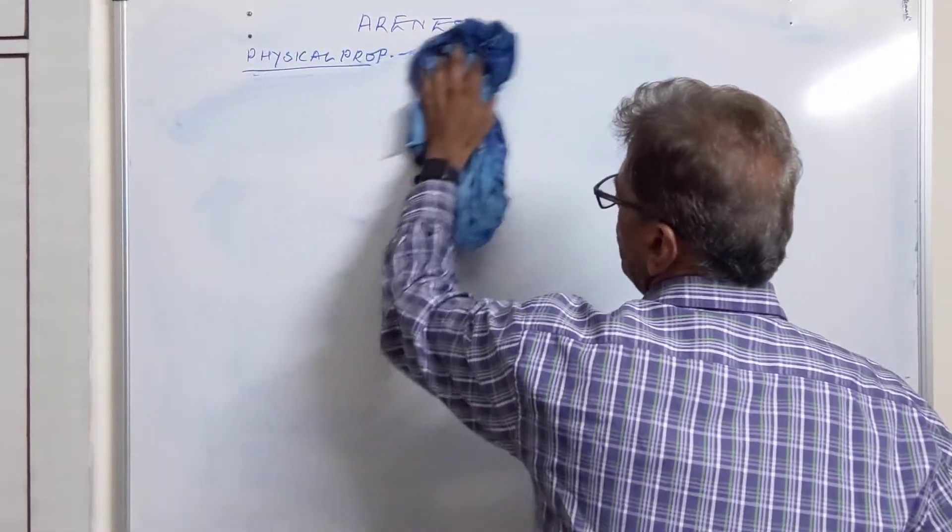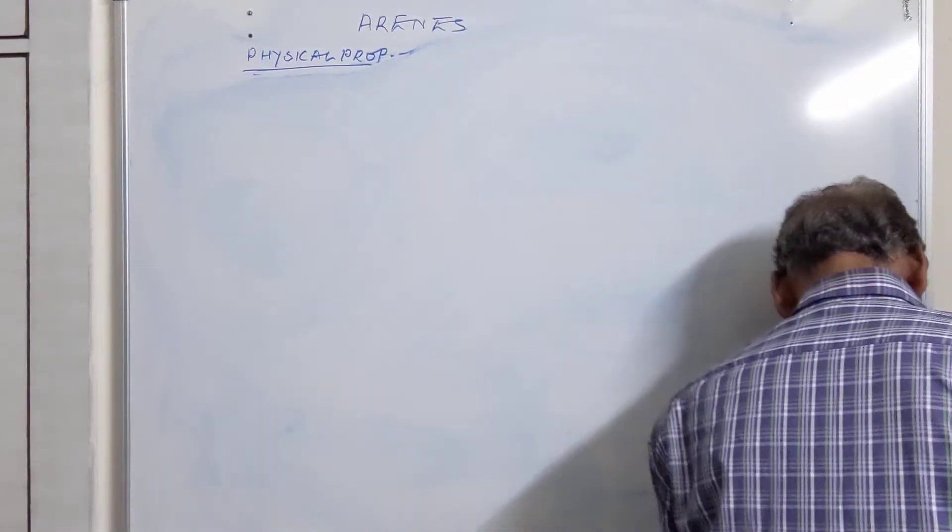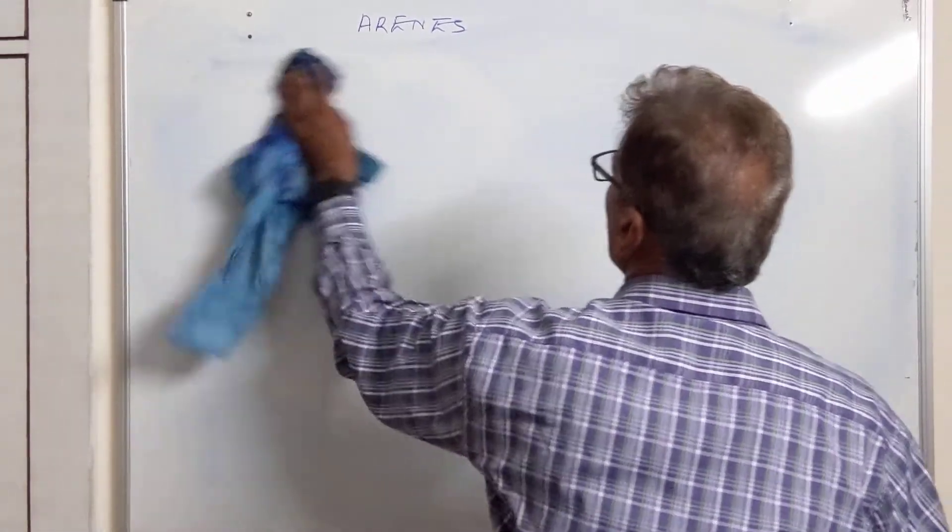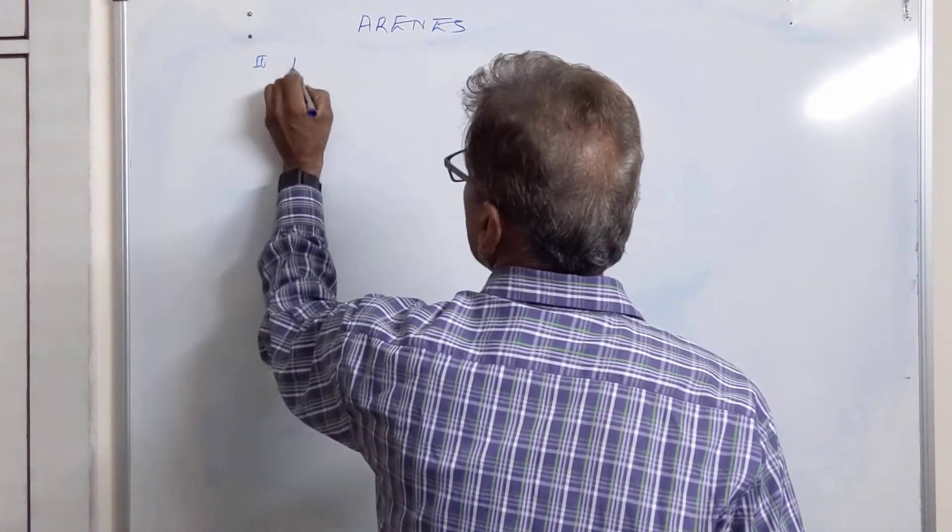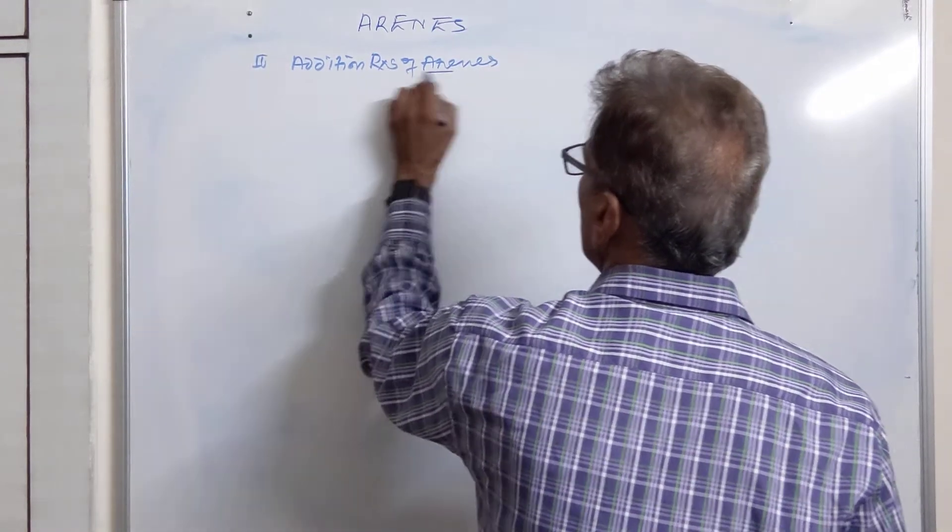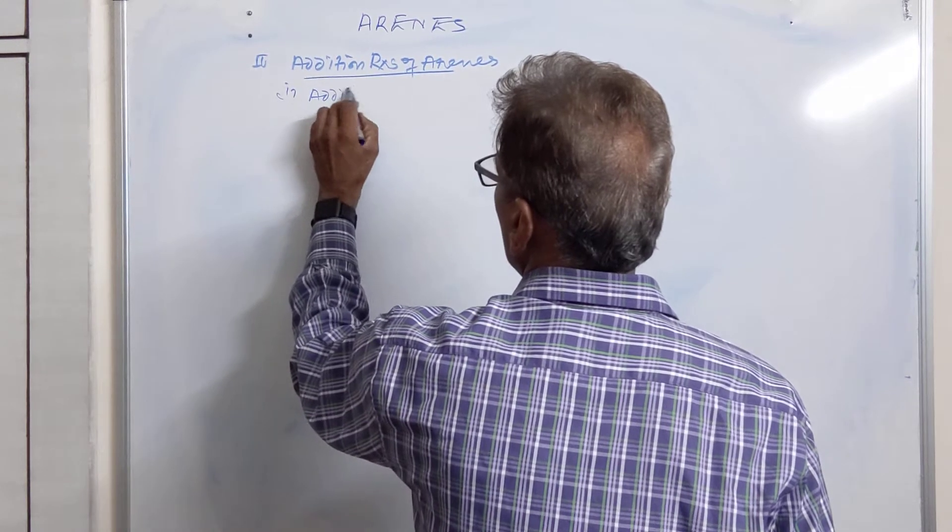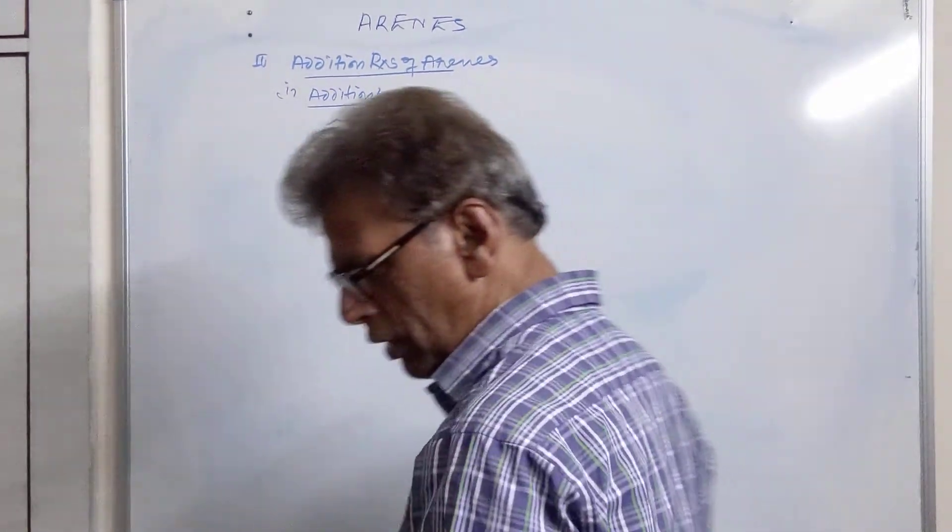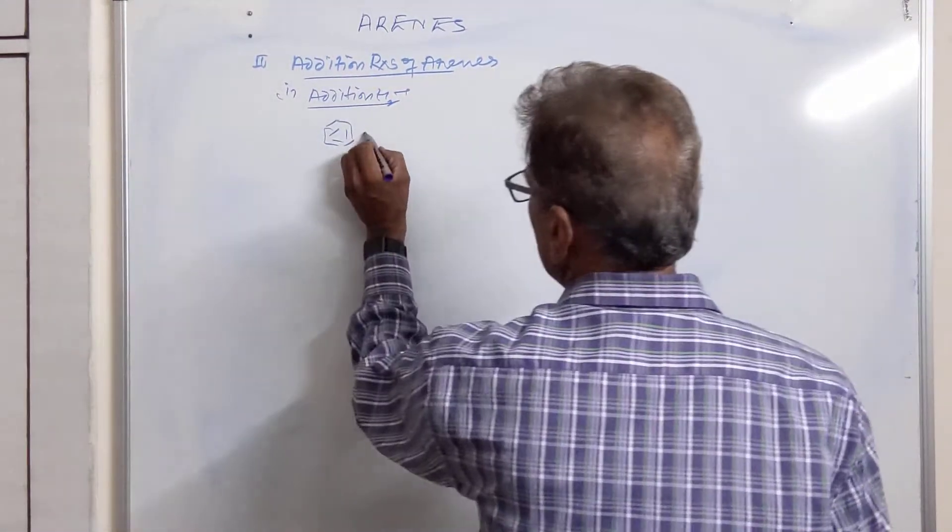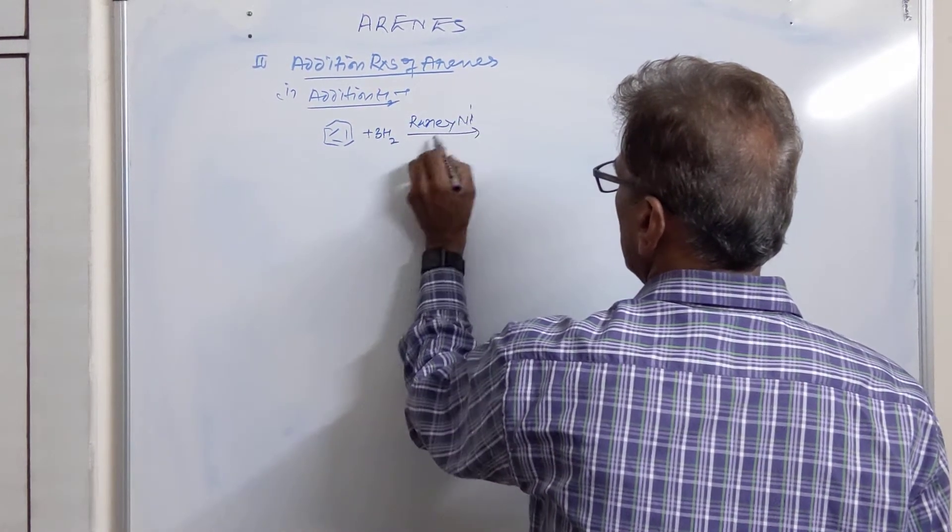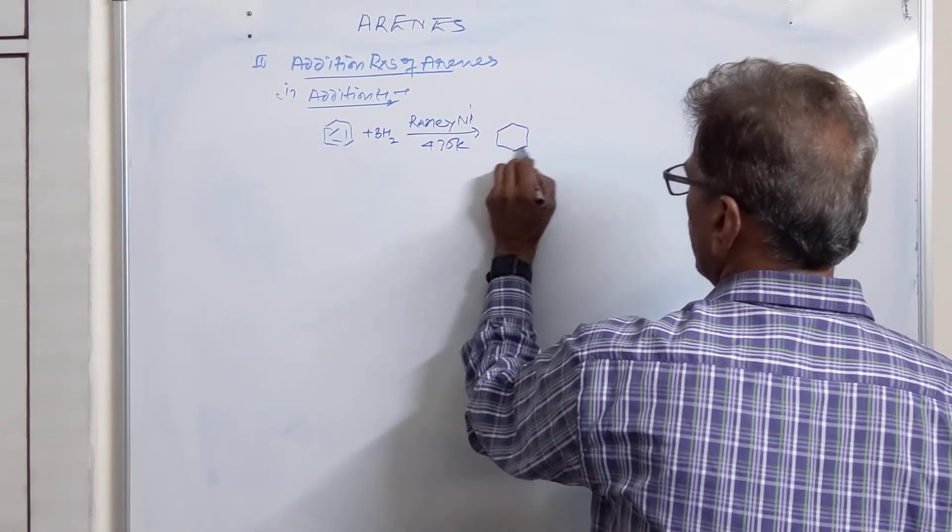We are continuing with the chemical properties of arenes. Now we are taking the second heading: addition reactions of arenes. First, we take addition of hydrogen. Benzene molecule has three alternate double bonds. Therefore it can add three molecules of H₂ in the presence of catalyst Raney nickel at 475 Kelvin. Product is cyclohexane.